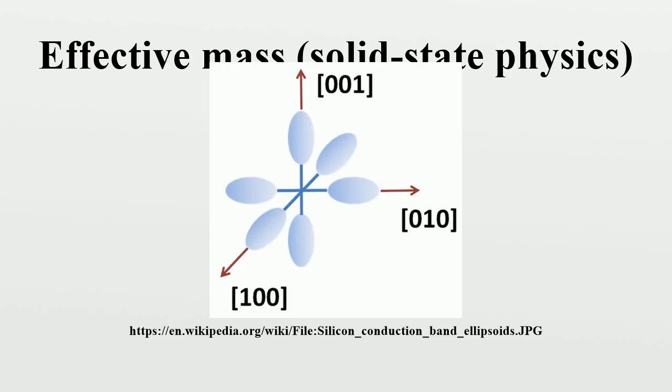One of the results from the band theory of solids is that the movement of particles in a periodic potential, over long distances larger than the lattice spacing, can be very different from their motion in a vacuum. The effective mass is a quantity that is used to simplify band structures by constructing an analogy to the behavior of a free particle with that mass.